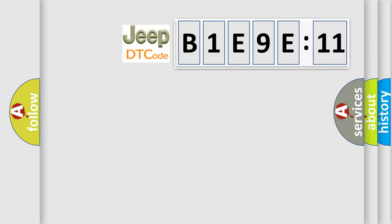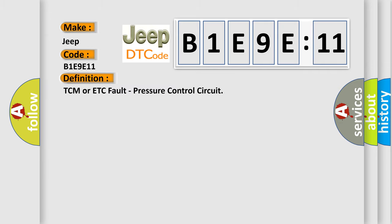So, what does the diagnostic trouble code B1E9E11 interpret specifically for Jeep car manufacturers? The basic definition is TCM or ETC fault, pressure control circuit. And now this is a short description of this DTC code: Transmission operation affected, pressure control circuit malfunction, fault present in transmission control module, fault stored in ETC control module.